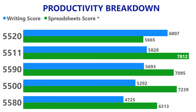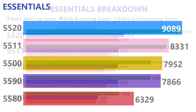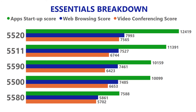Looking at the essentials, you'll see pretty much the machines are in order of release, with the 5520 far surpassing the 5511. In terms of startup, the 5520 is way above all of the machines, and the 5590 again just beats the 5500. In terms of web browsing score, the 5520 surpasses all of the machines in the test. The 5580 doesn't do too bad a job in terms of web browsing and video conferencing. In terms of video conferencing, the 5520 far surpasses the 5511 and all of the other models, and again we see that twist between the 5590 and the 5500.